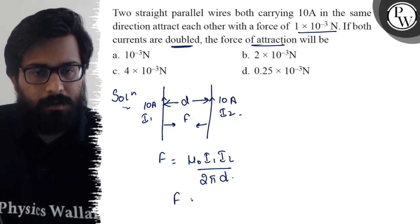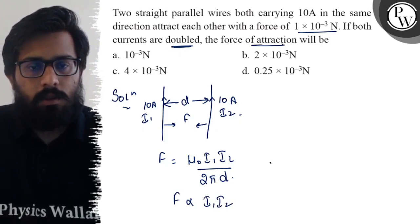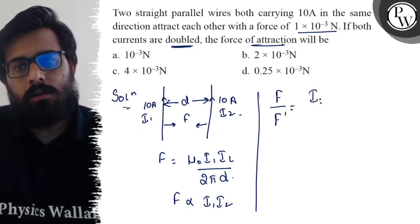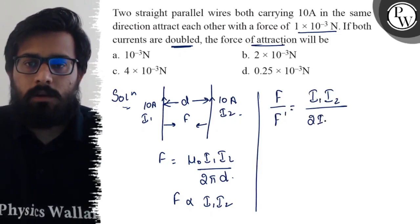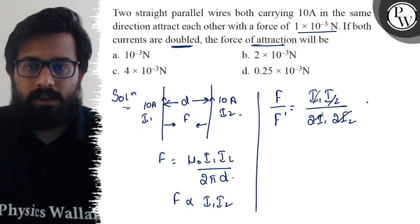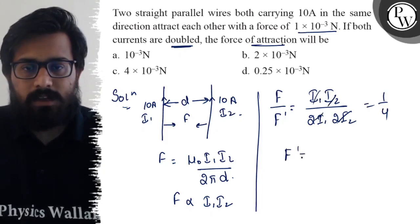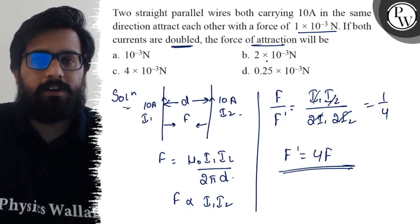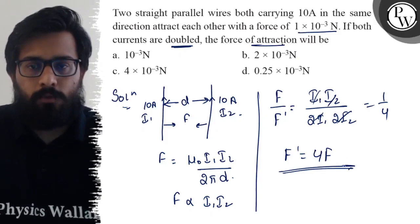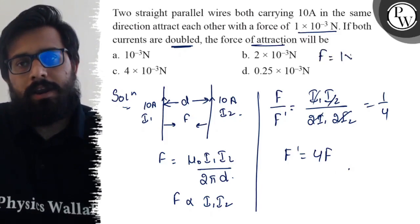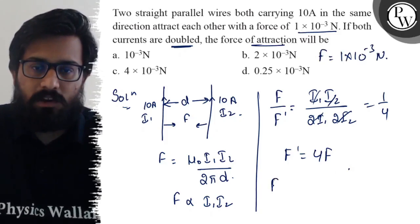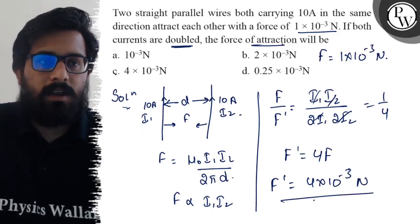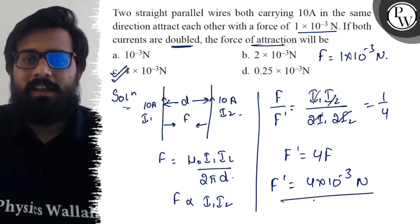From the formula, force is proportional to I₁ × I₂. So if both I₁ and I₂ are doubled, the force of attraction becomes four times. So if the initial force was 1×10⁻³ newton, the new force will be 4×10⁻³ newton. You will get option C, and hence option C is absolutely correct.